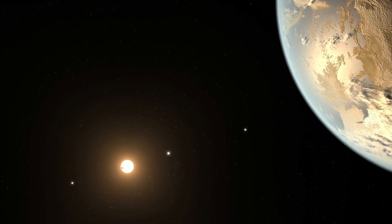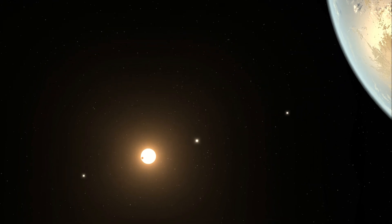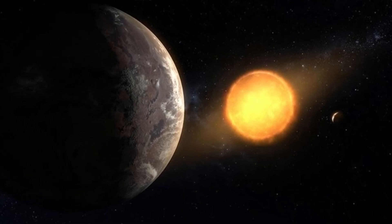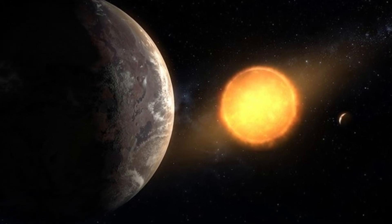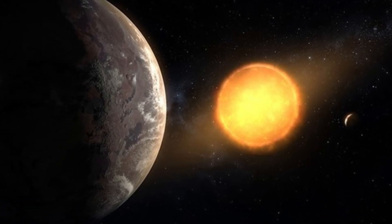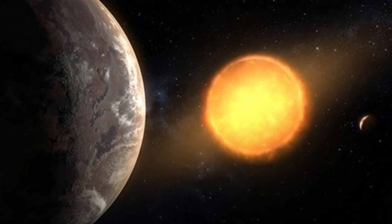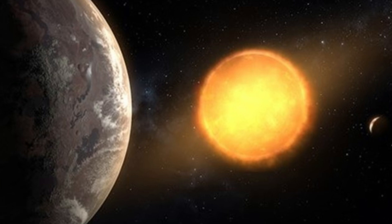Red dwarfs are known for their variability, and the habitability of planets orbiting such stars can be affected by frequent stellar flares and radiation bursts. These factors could lead to extreme temperature variations or disrupt atmospheric stability, making the development and sustainability of life more difficult.